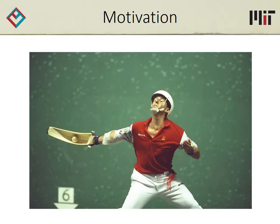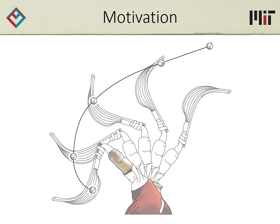We've been inspired by the game of Jai-Alai. In this game, the players use baskets, called cestas, to throw balls extremely fast with lots of spin. It's the synthesis of the basket shape and the throwing motion that allows them to achieve such throwing speeds. So, if we were building a robotic Jai-Alai player, how would we design the basket shape? How would we design the throwing motion?